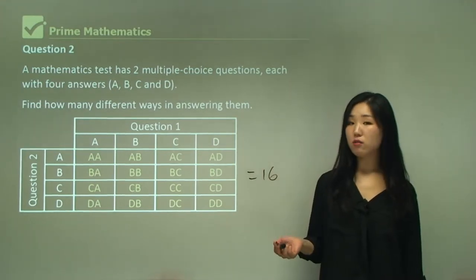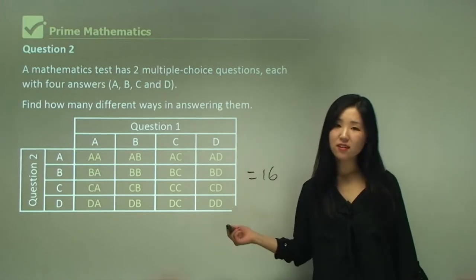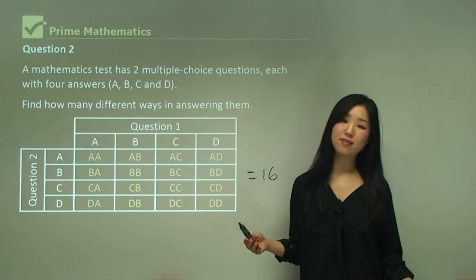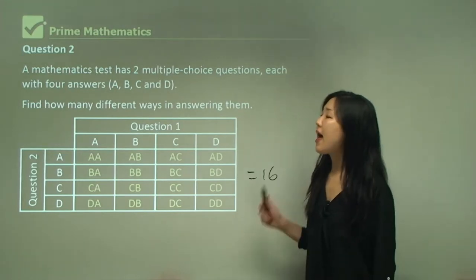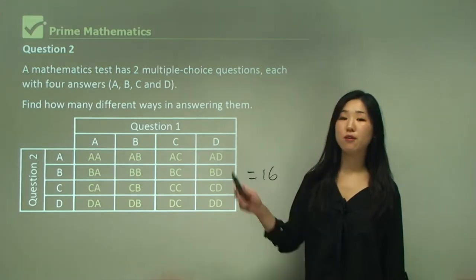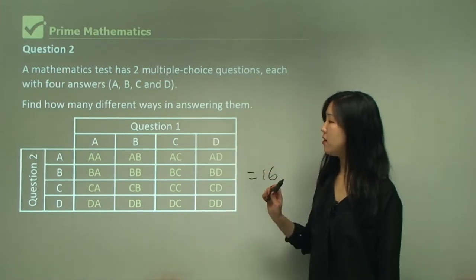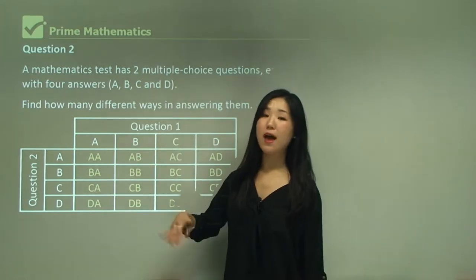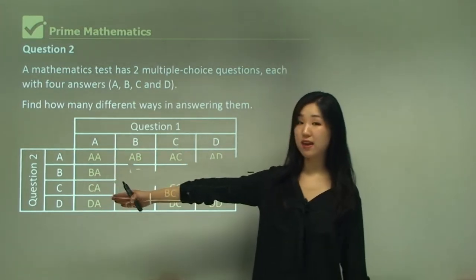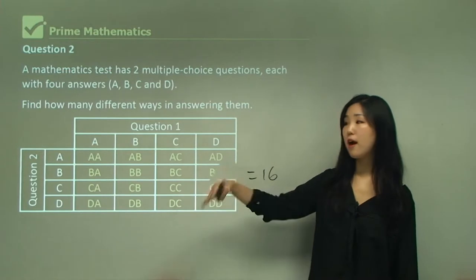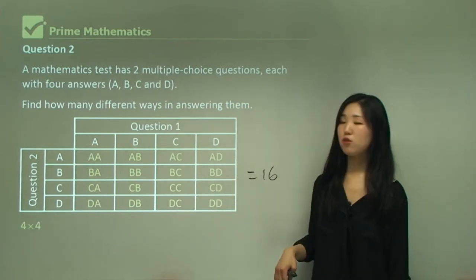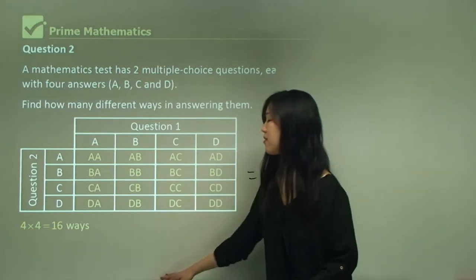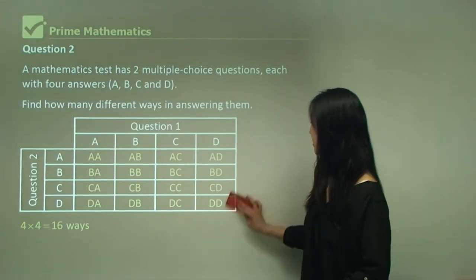Instead of doing all that counting and drawing up that massive table, you could have used the basic counting technique. How many outcomes for the first event — question one? We have four. How many outcomes for the second event — question two? Again, four. So all you need to do is four times four and you get sixteen, which is the same as how we counted it. It's very handy and easy to do.